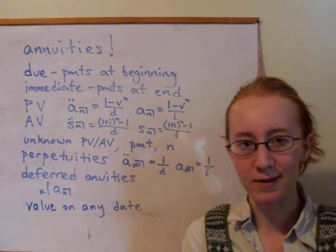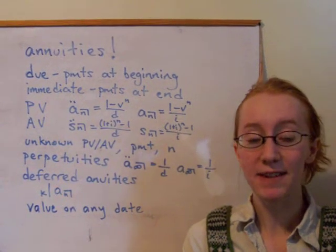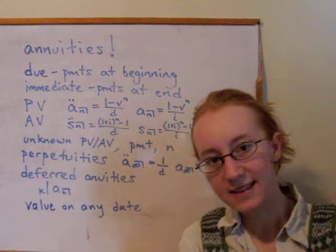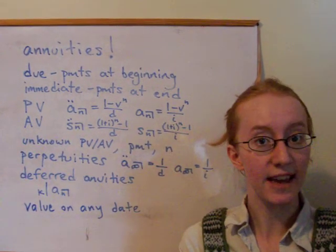There are a number of different ways to value this deferred annuity. We could think of it as an annuity due at time k, and then discounting that back to time 0 by multiplying it by v to the k.